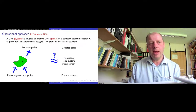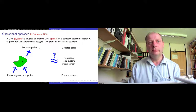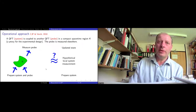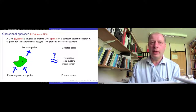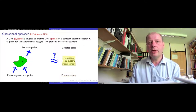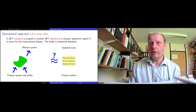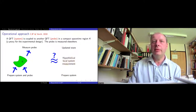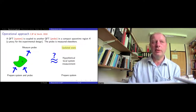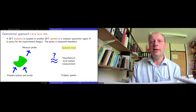We wanted to adapt quantum measurement theory to quantum field theory in order to get an understanding of measurement in QFT. Here's the basic idea: we're going to have two quantum field theories, one called the system and one called the probe. These two theories are coupled together in a compact region of space-time, which will always be denoted K. This coupling in a compact region of space-time you should think of as a proxy for a complicated experiment.